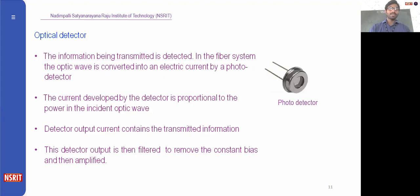Returning to the block diagram: we dealt with the optical source, then the modulator, then the coupler, then the channel — now at the other end of the channel we have an optical detector, which is a photo detector. Detectors are used to identify the signals. In the fiber system, the optical wave is converted into an electric current by the photo detector, converting light energy into electrical energy. It acts as a transducer used as a detector.